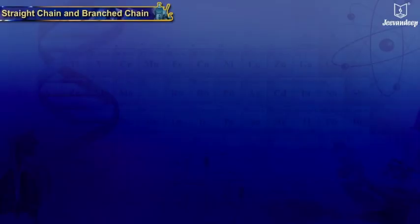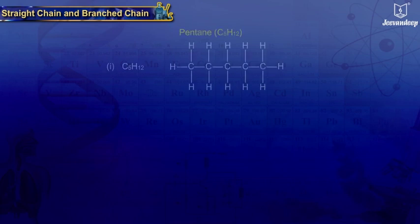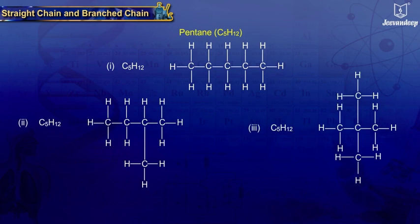Straight chain and branched chain. If we take the example of pentane C5H12, we can see that different structures are possible. In the above compound, the carbon atoms are linked together in the form of open chain.